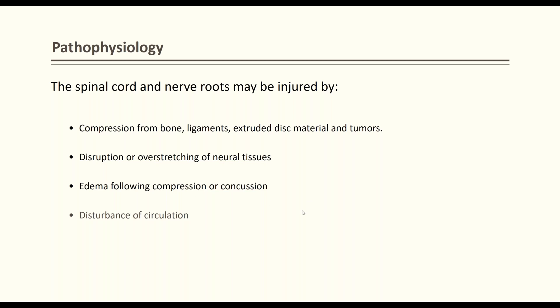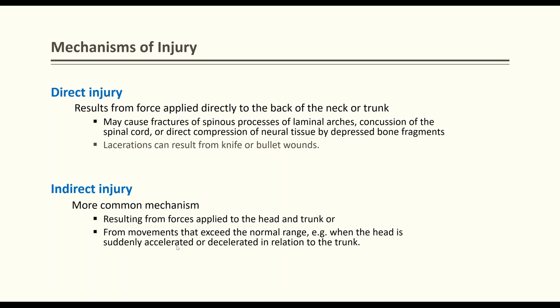Pathophysiology: compression from bones, ligaments, disc herniation, or tumors can cause neural tissue injury. Even edema without direct trauma can disturb signal conduction. Vascular supply disturbances are the most important cause — even without direct injury, disrupted vascular supply inhibits the motor pathway. There are two types of injury: direct injury (from direct impact to neck or trunk — causing fracture, spinal cord concussion, or direct neural compression) and indirect injury (more common — from whiplash, acceleration forces, or car accidents).